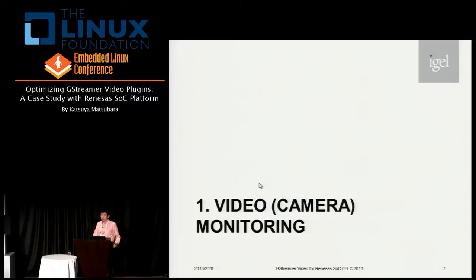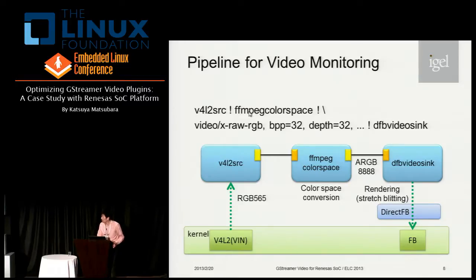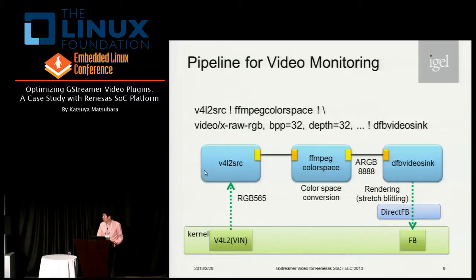So much for the introduction. Now let me move on to the first application: video monitoring. This slide shows a pipeline for video monitoring — this command line is a GST launch style description, and this figure illustrates how video data flows from source input to output. The V4L2 source element reads a video frame captured by the VIN device. The VIN can output video as a 16-bit RGB image, so the image should be converted to the destination LCD color format. In the case of my target board, the LCD color format is 32-bit RGB.